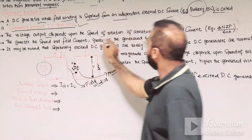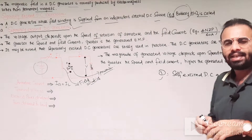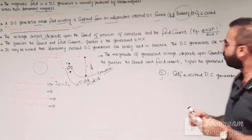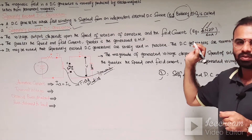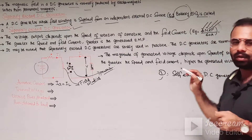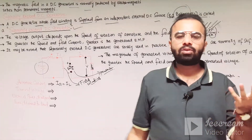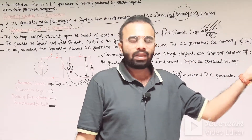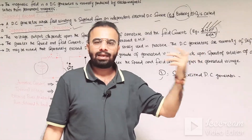The voltage output depends upon the speed of rotation of the armature and the field current. According to the EMF equation of the DC generator: E = (φ × N × Z × P) / (60 × A), where φ is the magnetic flux, N is the number of rotations (speed of the armature), P is the number of poles, Z is the number of armature conductors, and A is the number of parallel paths. The value of A equals 2 in the case of wave winding, and A equals P (the number of poles) in the case of lap winding.